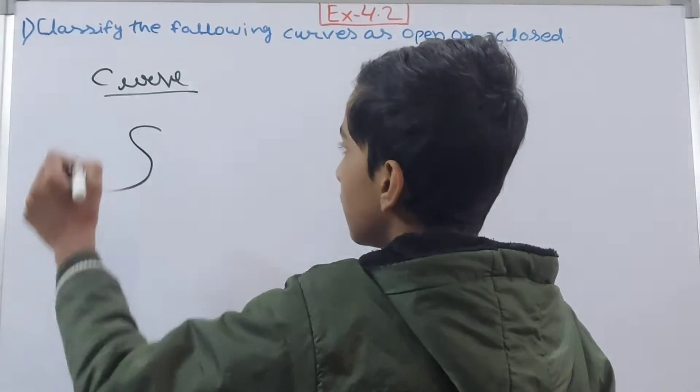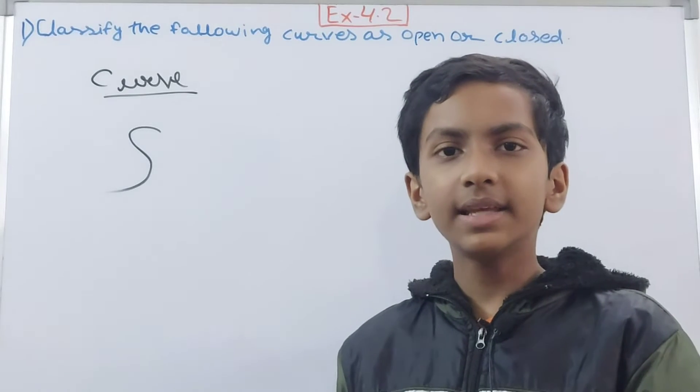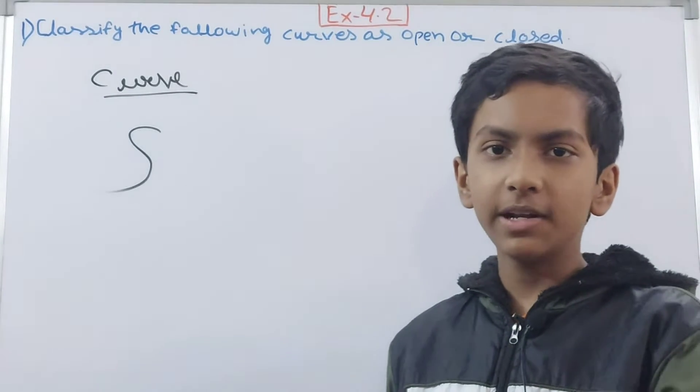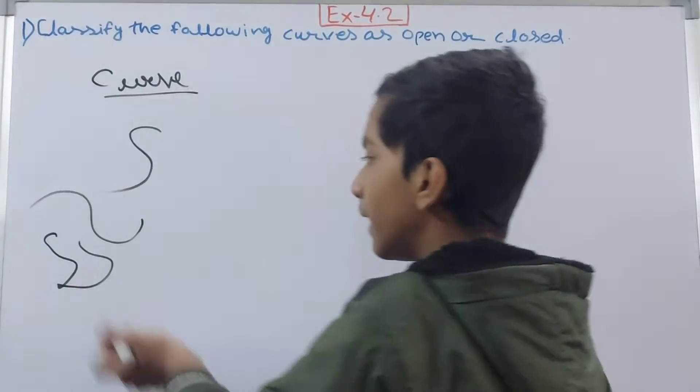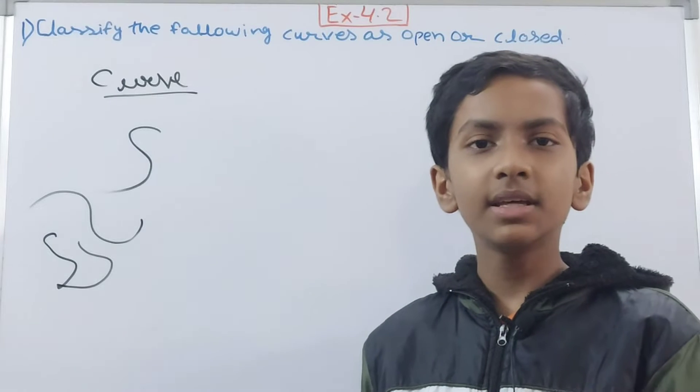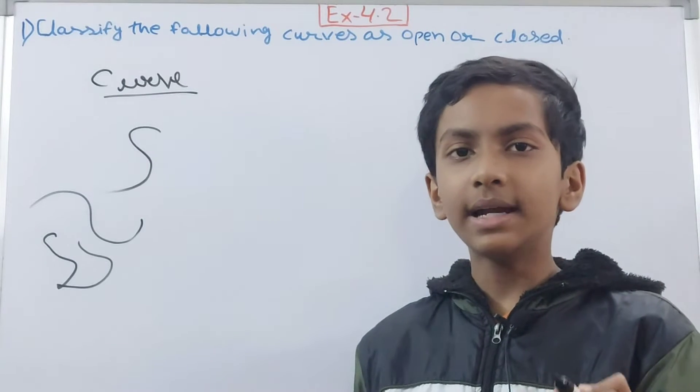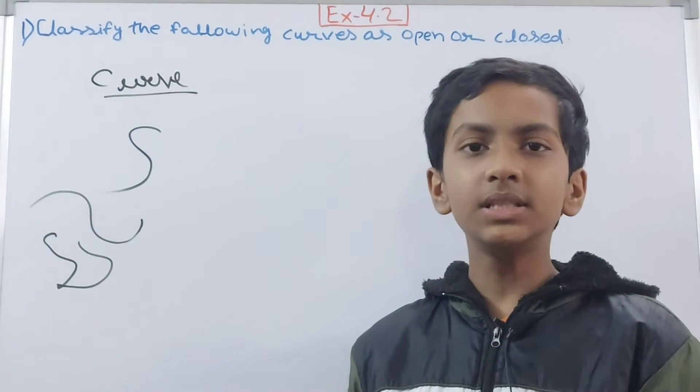Suppose I draw this. This is what is called a curve. Anything that we draw or doodle—doodle means to draw rough-handedly like this—anything you draw, that is called a curve. Curve in mathematics means not straight.